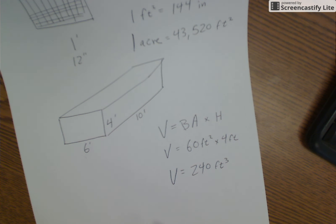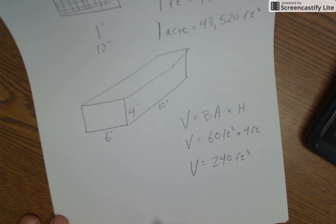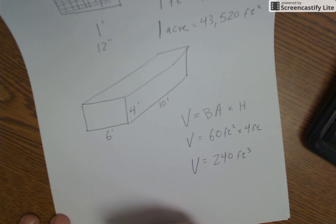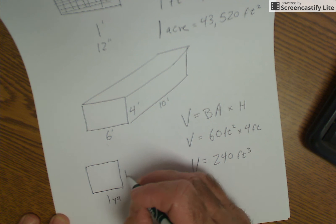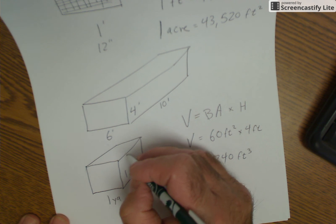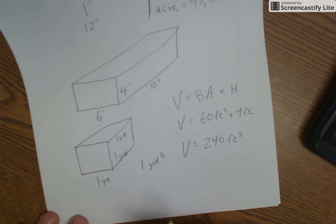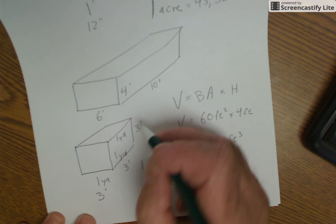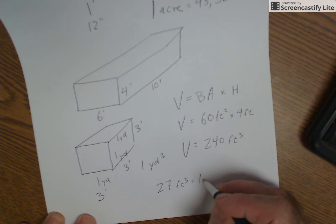Knowing area and volume is essential in construction. You calculate volume all the time when ordering concrete. When you call it a yard, it's actually a cubic yard — one yard by one yard by one yard. A cubic yard weighs about a ton, and it's also 3 feet by 3 feet by 3 feet, so 3 times 3 times 3 equals 27 cubic feet per cubic yard.